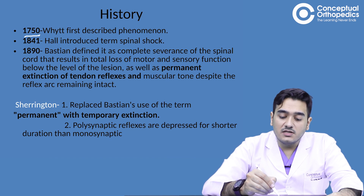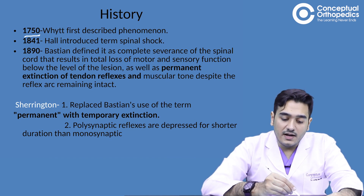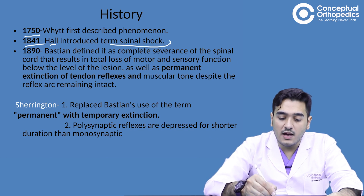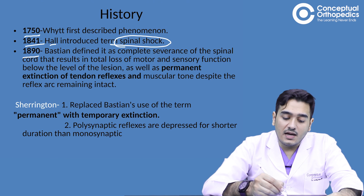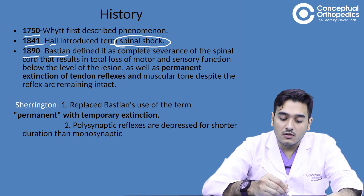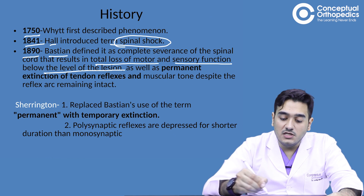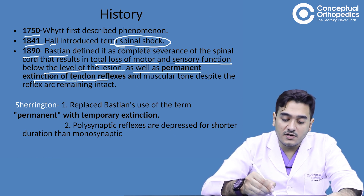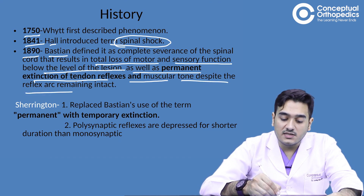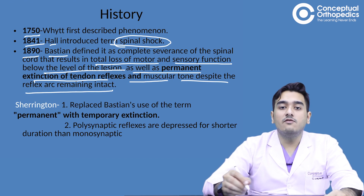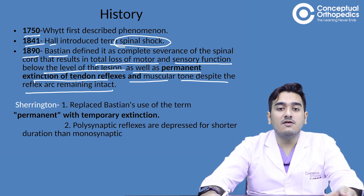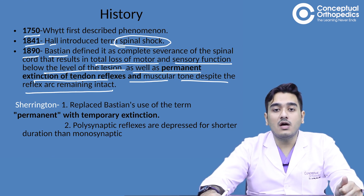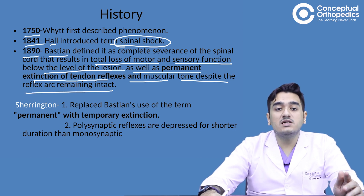In the history of spinal shock: in 1750, Whytt first described the phenomenon. In 1841, Hall introduced the term 'spinal shock.' In 1890, Bastian defined it as complete severance of the spinal cord resulting in total loss of motor and sensory function below the level of lesion, as well as permanent extinction of tendon reflexes and muscular tone, despite the reflex arc remaining intact.